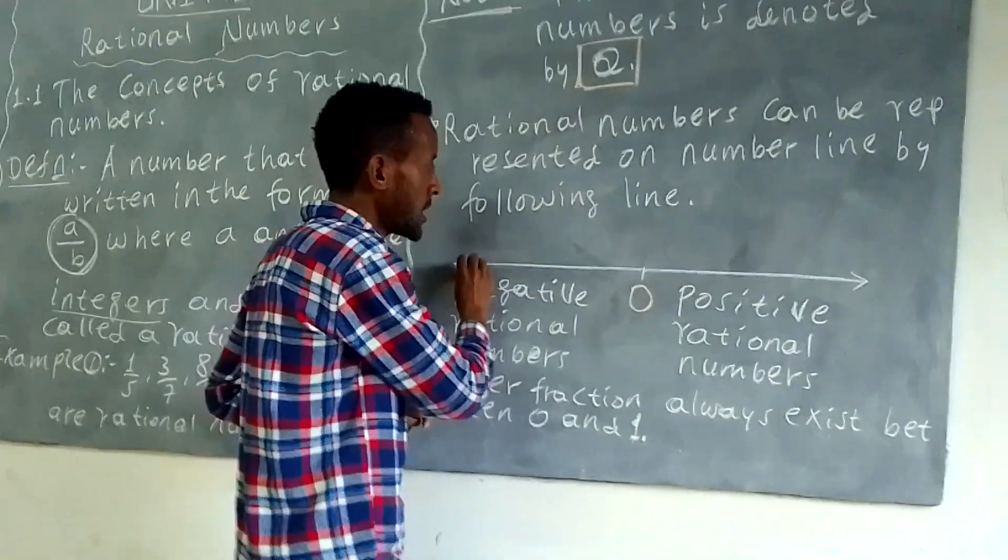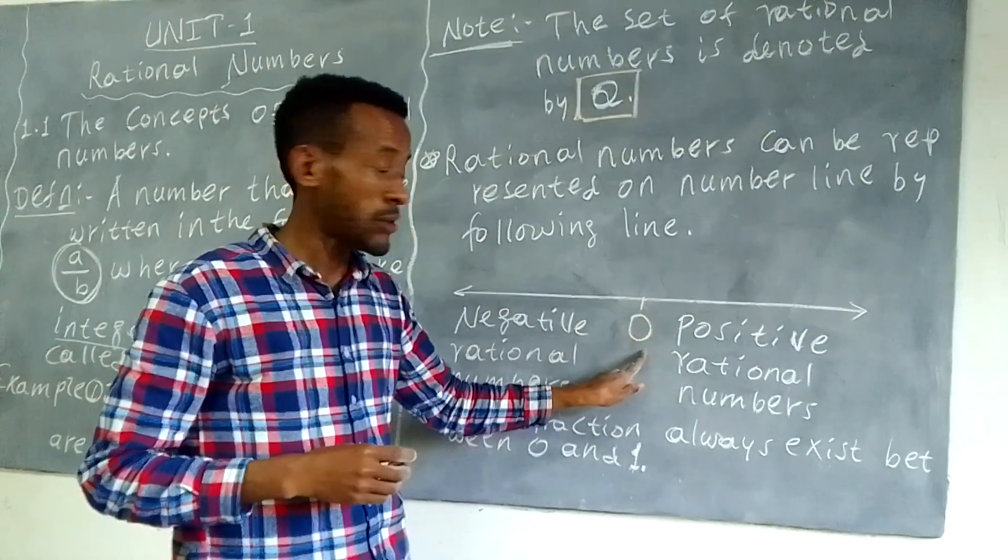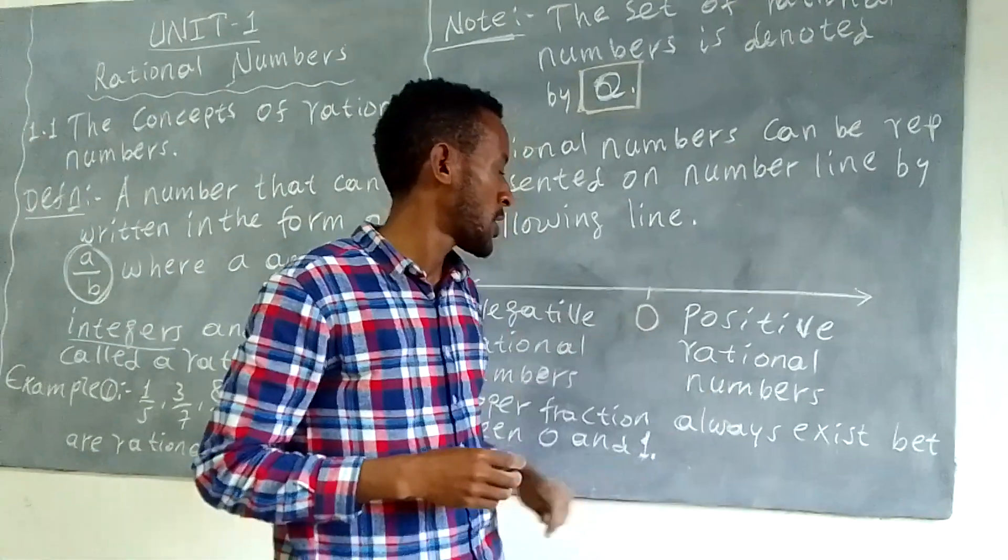This is a line, a straight line. Here is the center, which is 0. The left side shows negative numbers, the right side shows positive numbers.